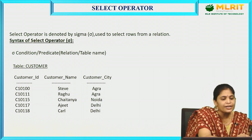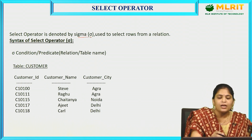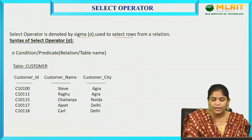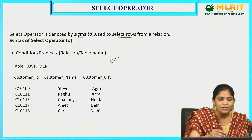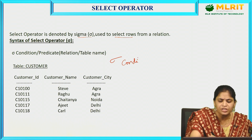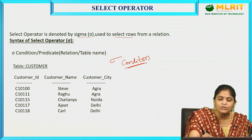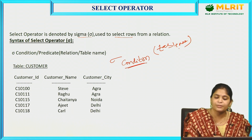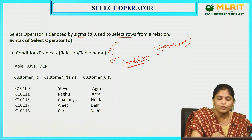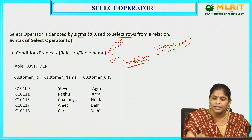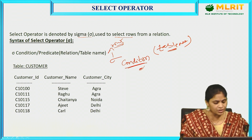The select operator is denoted by sigma (σ) and is used to select rows from a relation. The syntax is: σ(condition)(table_name). Based upon the condition, we select rows; the table name specifies from which relation the rows are to be retrieved.